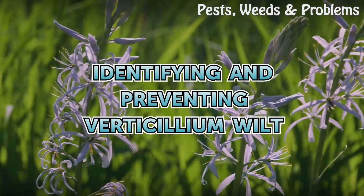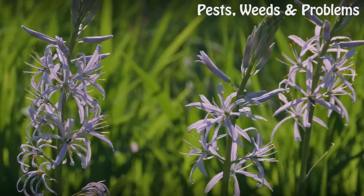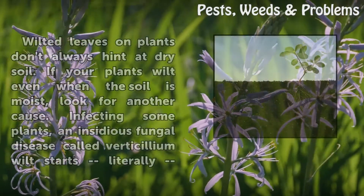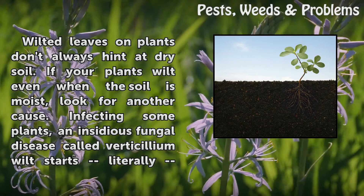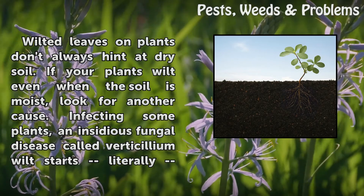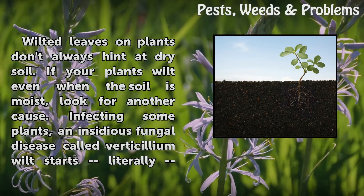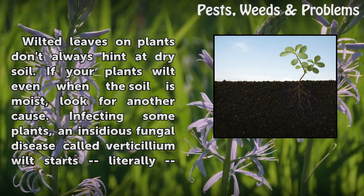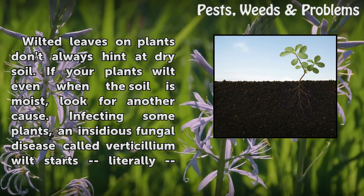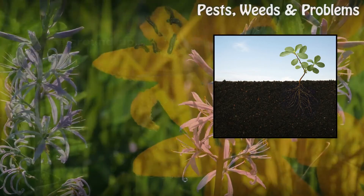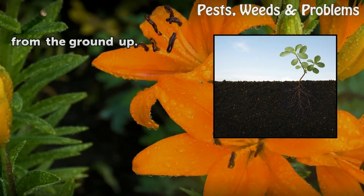Identifying and preventing verticillium wilt. Wilted leaves on plants don't always hint at dry soil. If your plants wilt even when the soil is moist, look for another cause. Infecting some plants, an insidious fungal disease called verticillium wilt starts literally from the ground up.